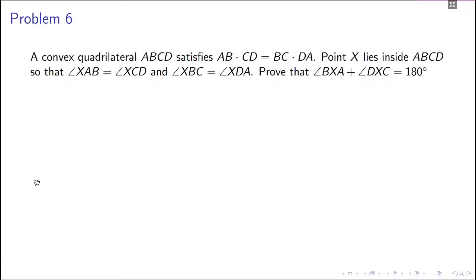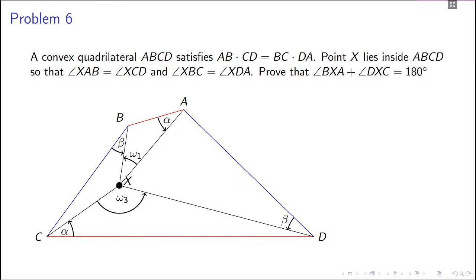So this is the problem: there's a convex quadrilateral ABCD that satisfies the product of opposite sides being equal, so AB times CD equals BC times DA. The product of these two red lines equals the product of the two blue lines. There's a point X inside ABCD such that the angle X makes with one pair of sides equals the angle it makes with the other pair, and these two angles are equal. What we have to show is that angle BXA plus angle DXC equals 180 degrees — basically this angle plus this angle is 180 degrees.